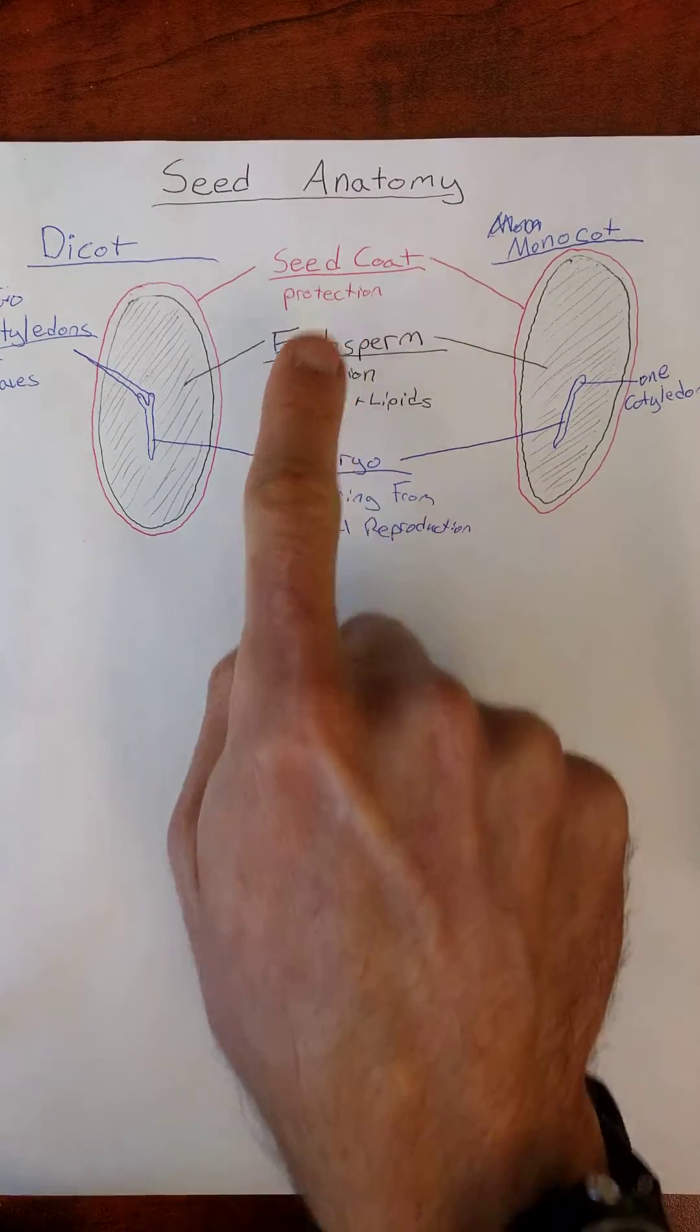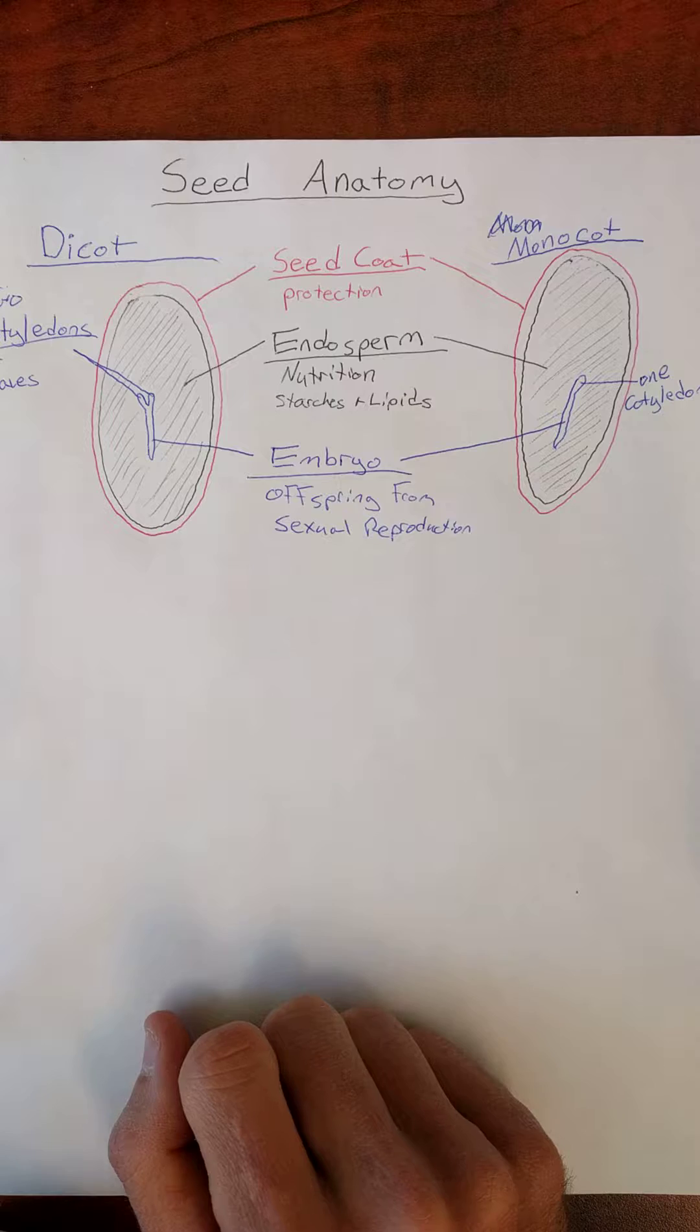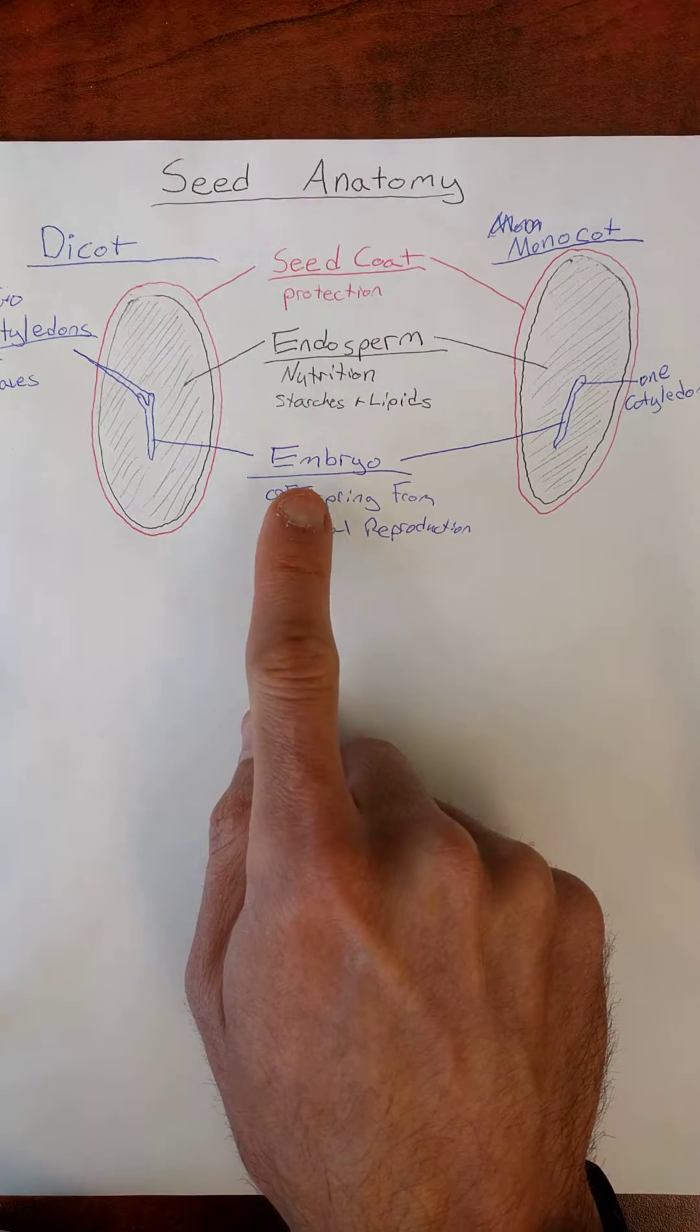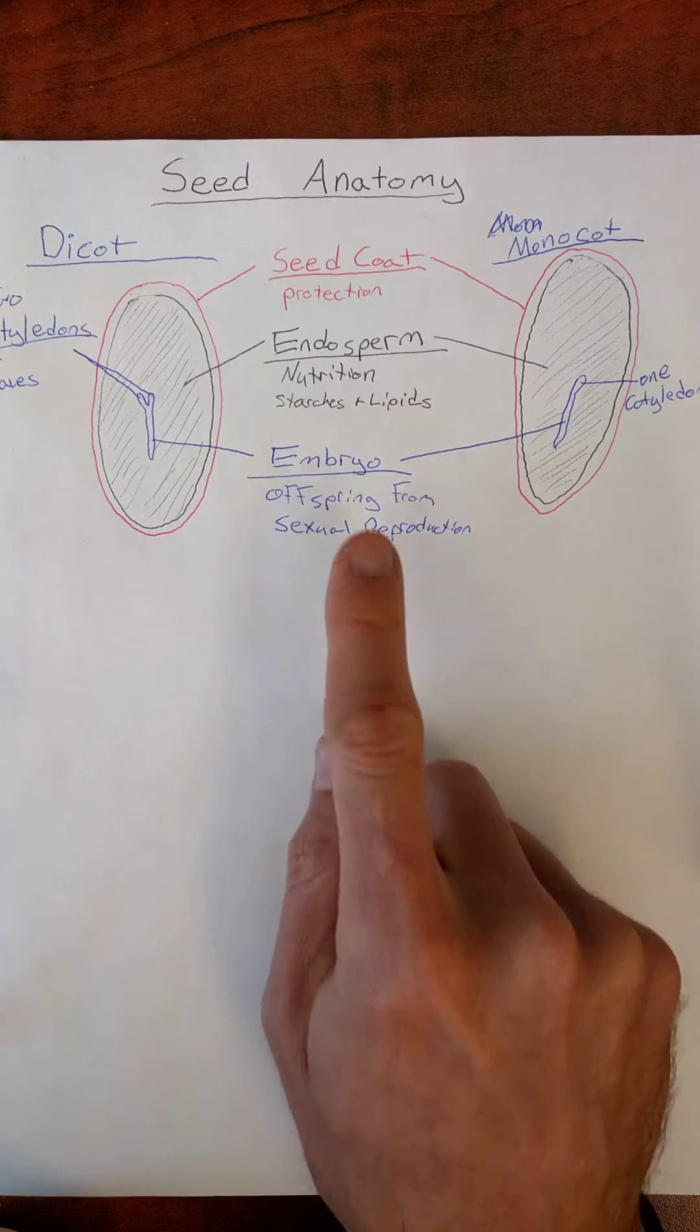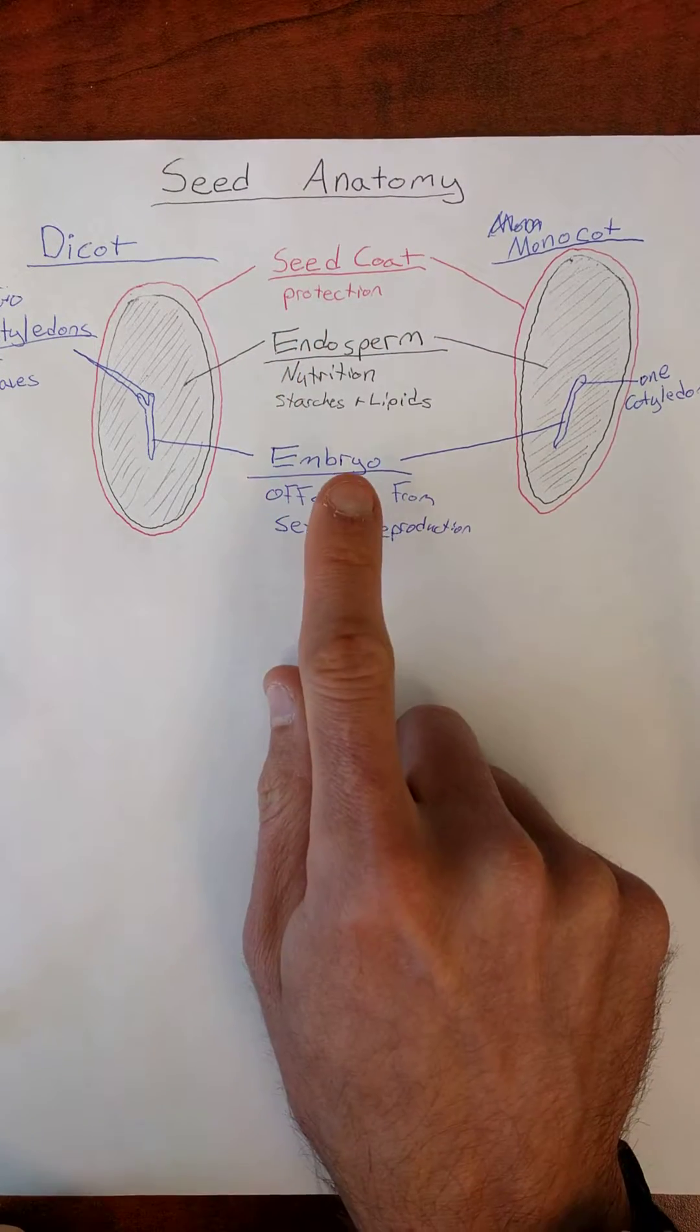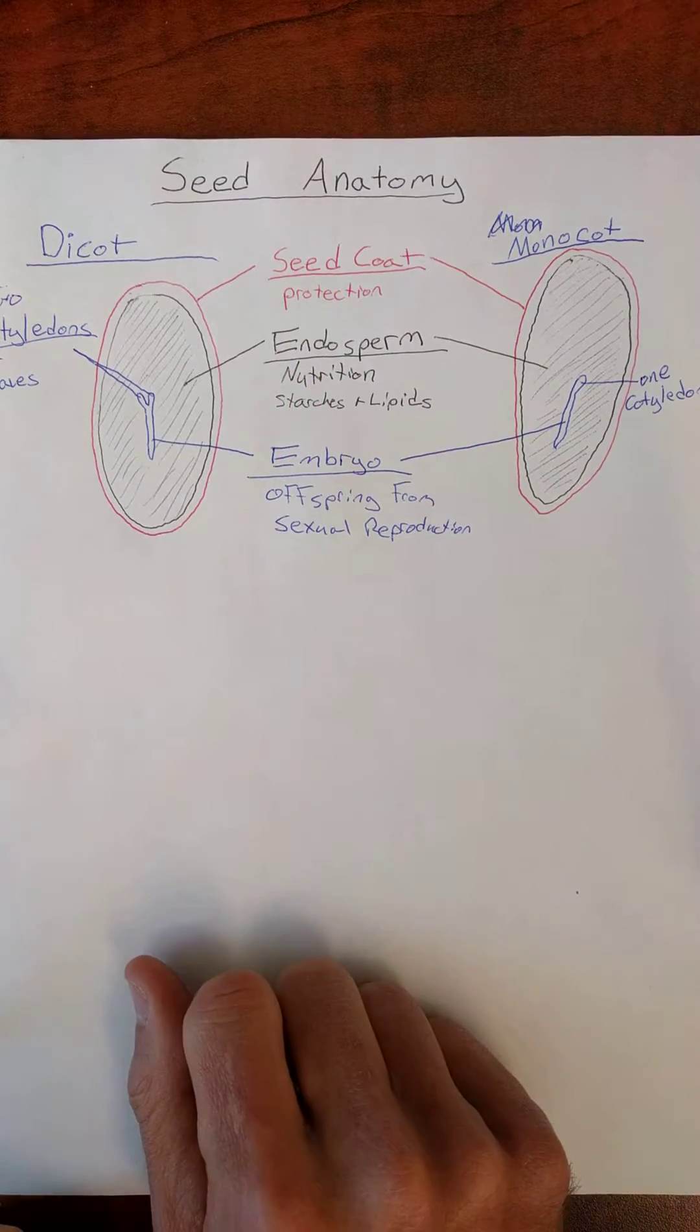Let's do an analogy. Seed coat, endosperm, embryo. The way I always like to remember this is a good parent sends their young child off to school with a rain jacket, a lunchbox, and himself. Let me try that again. A good parent sends their child, the embryo, off to school with a rain coat and a lunchbox. So, the parent plant still sends the embryo off into the world with protection against the elements and food to start its life.